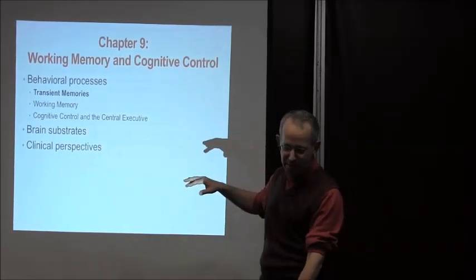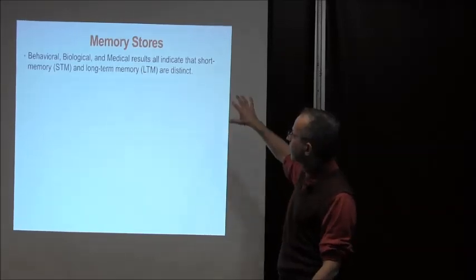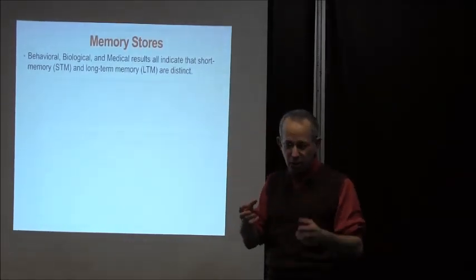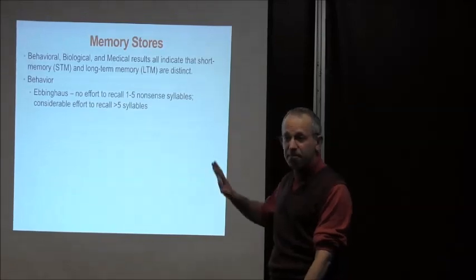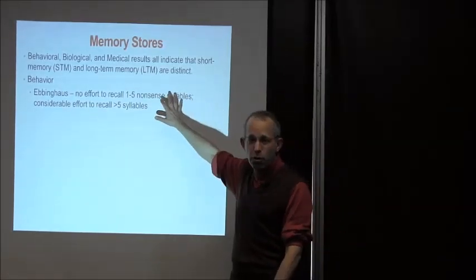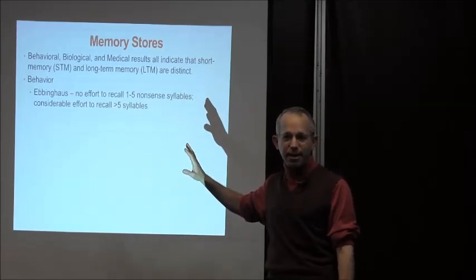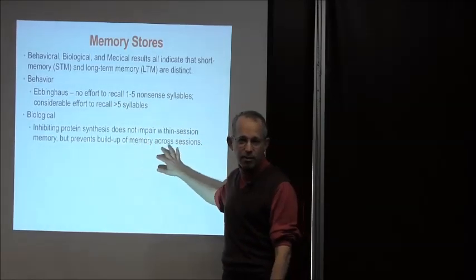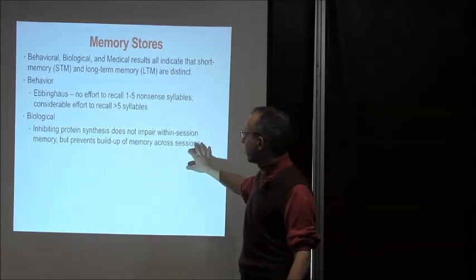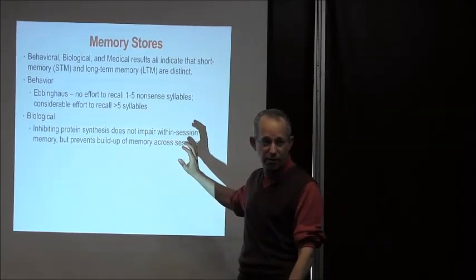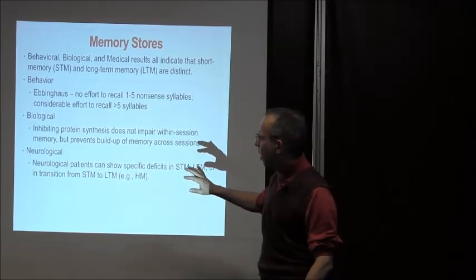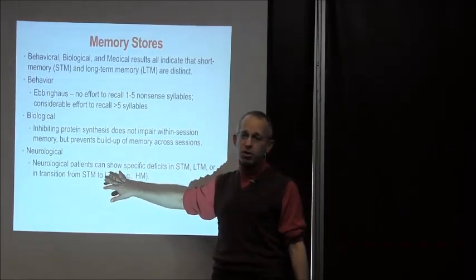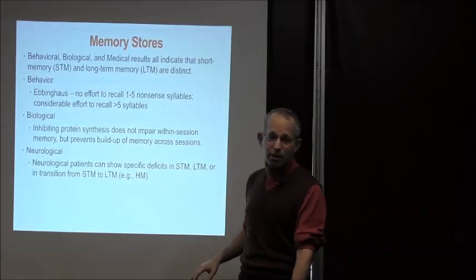I want to start by talking about transient memories. There's a variety of evidence — biological, behavioral, medical — indicating that there are distinct short-term and long-term memories. This goes back to Ebbinghaus, who noted that there's essentially no effort to recall one to five nonsense syllables immediately, but beyond that it becomes effortful. Chemical interventions involving protein synthesis impair within-session memory of a few items. And neurologically, there are patients who show specific deficits to short-term memory, long-term memory, or the transition between them — like patient HM.